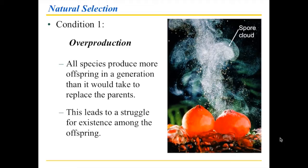With 40,000 potential tadpoles, it's pretty clear: if they're all in the same pond or puddle, there are limited resources. Those that somehow perform better in obtaining nutrients and food would have a greater chance to survive into becoming a mature toad. Some of them are going to die. This is natural selection — not that somebody comes along and picks which tadpoles survive, but just the environment and circumstances that dictate who survives.